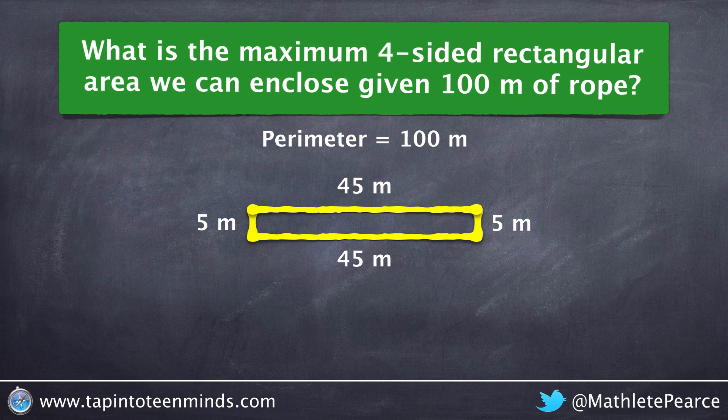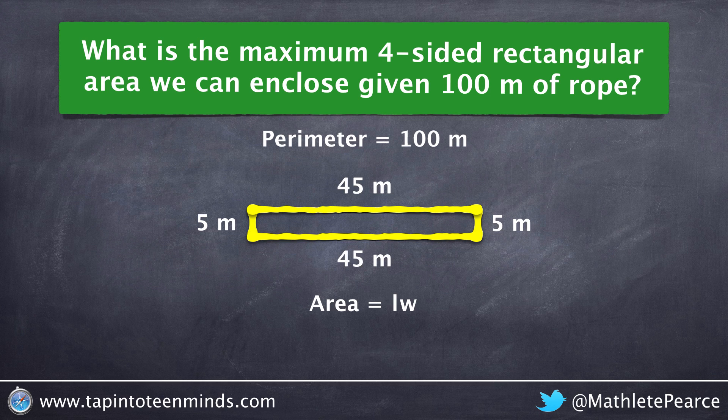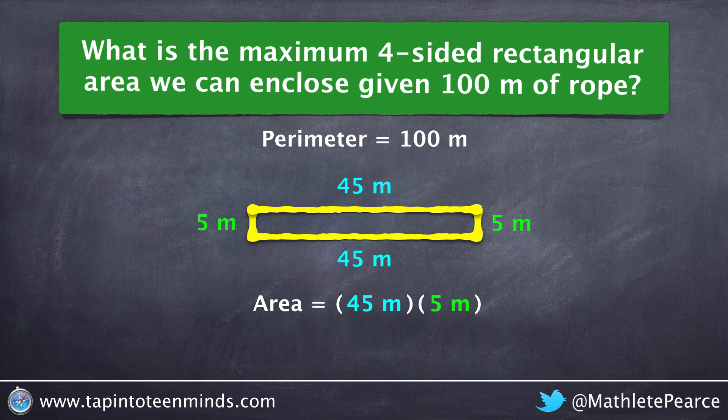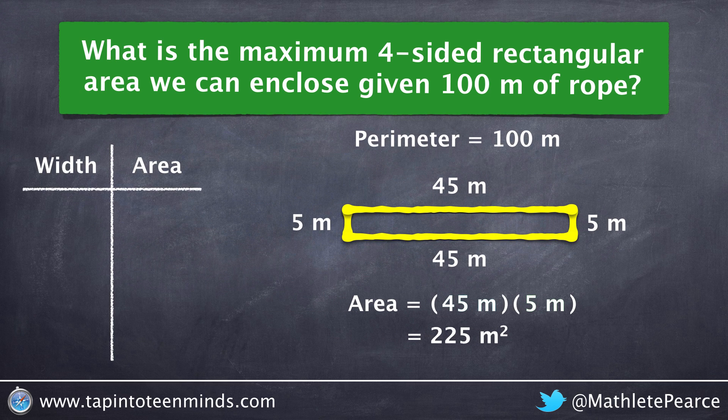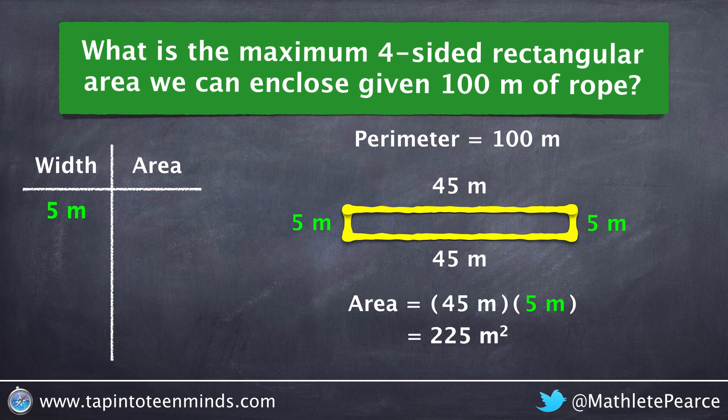So we have a 5 by 45 enclosure. And since our area formula for a rectangle is length times width, we'll multiply our length of 45 meters times our width of 5 meters for an area of 225 meters squared. Looking at the relationship between the width and the area, we have a width of 5 meters here, yielding an area of 225 meters squared.